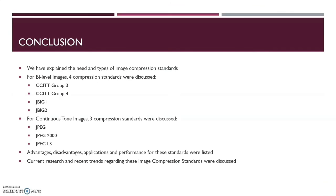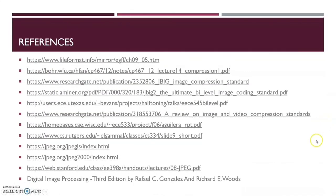Conclusion: we explained the need and types of image compression standards. For bi-level images, 4 compression standards were discussed: CCITT Group 3, CCITT Group 4, JBIG-1 and JBIG-2. For continuous tone images, 3 compression standards were discussed: JPEG, JPEG 2000 and JPEG-LS. Advantages, disadvantages, applications and performance of each standard were listed. Current research and recent trends regarding image compression standards were also discussed. The references are as follows. Thank you.